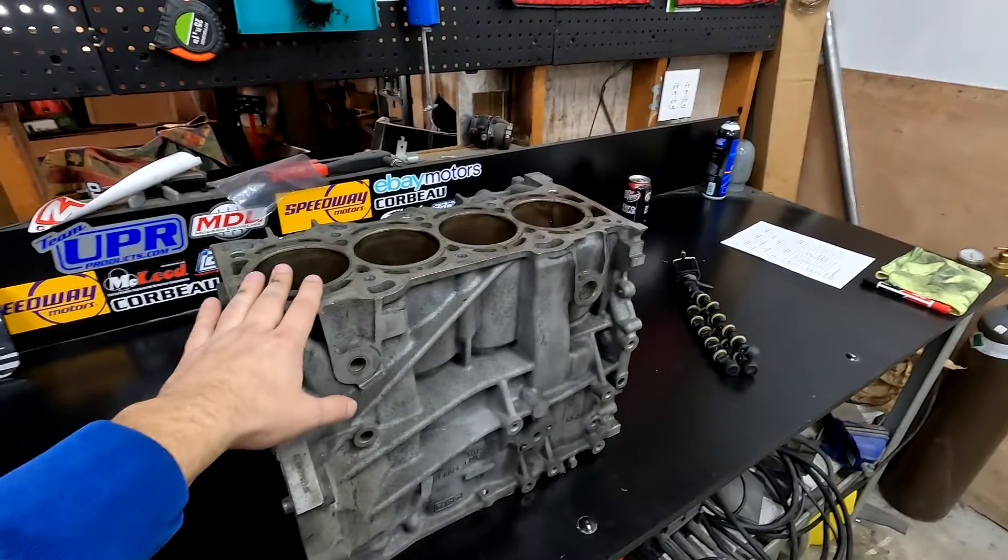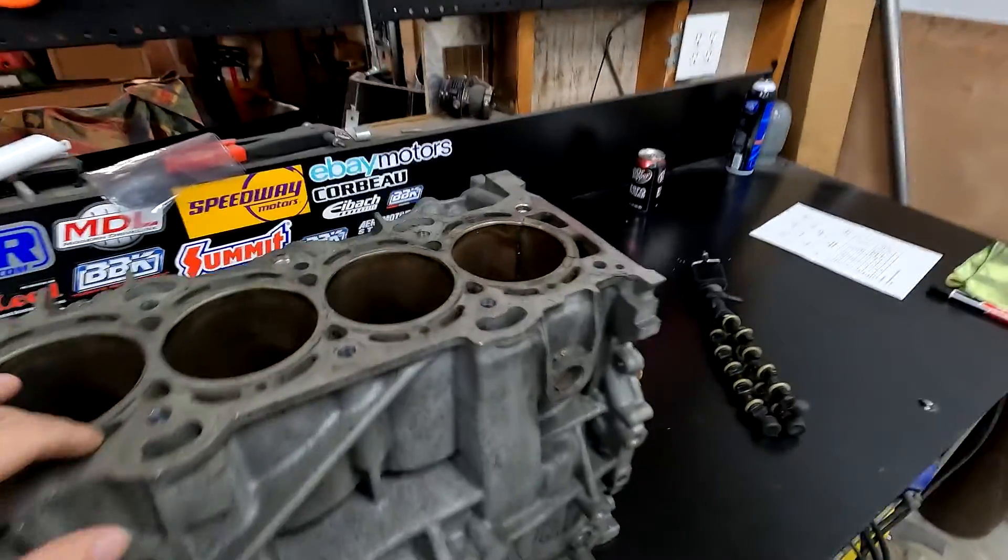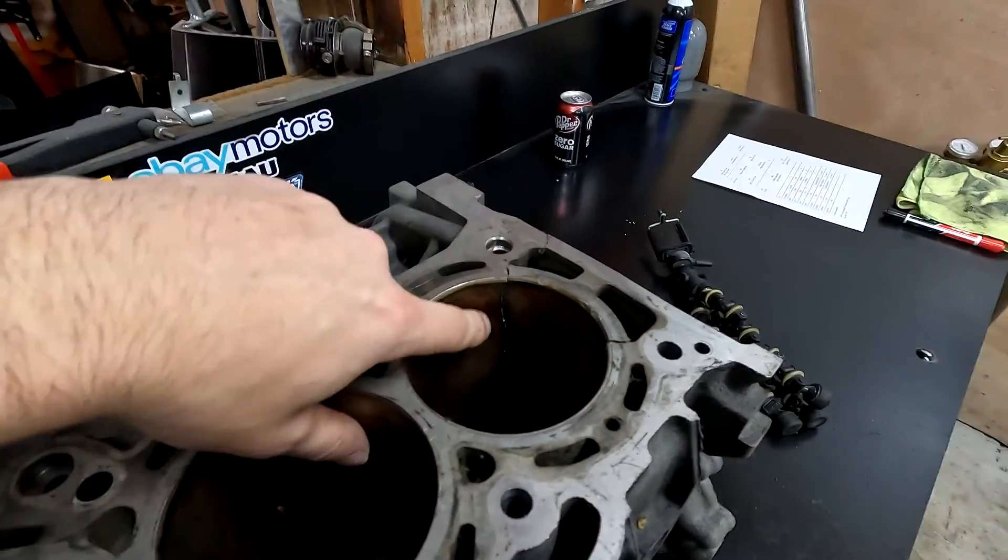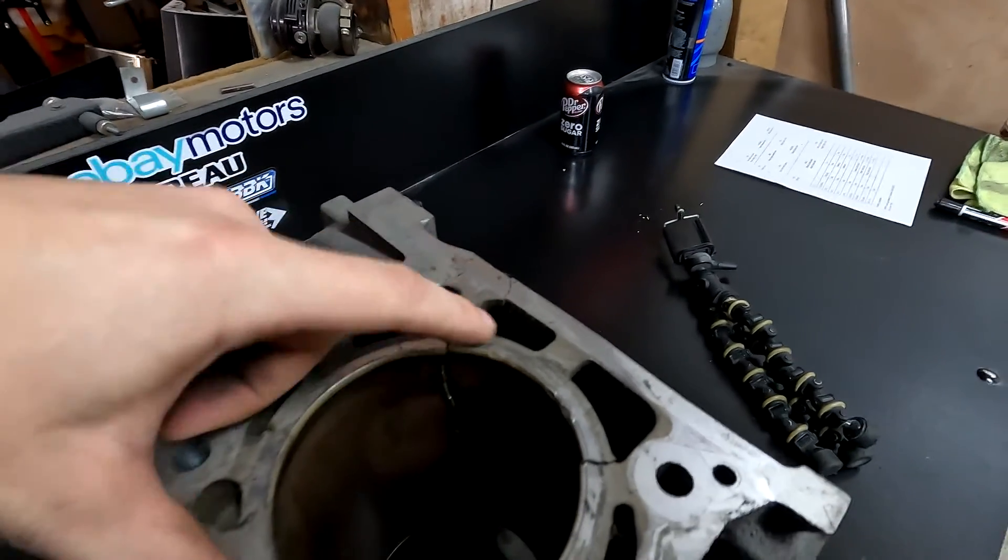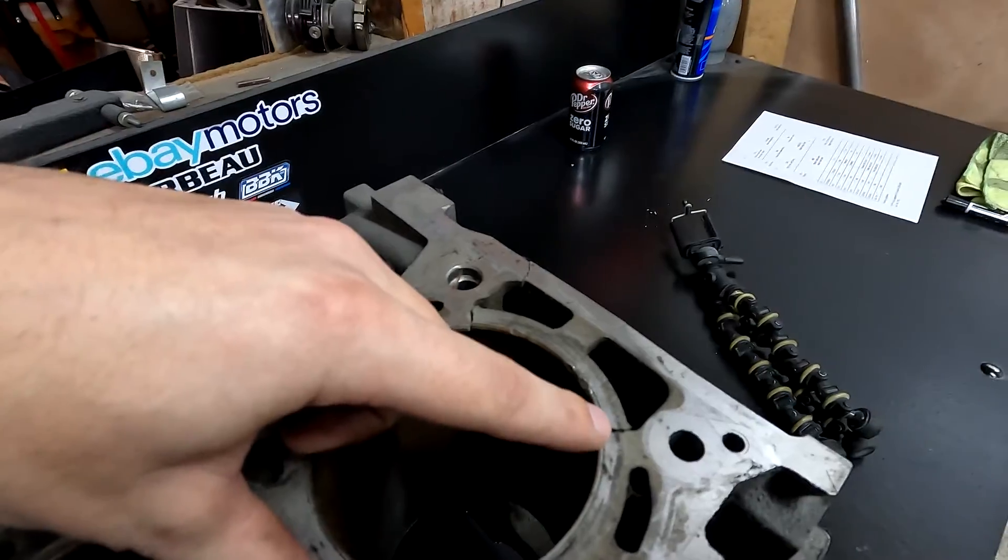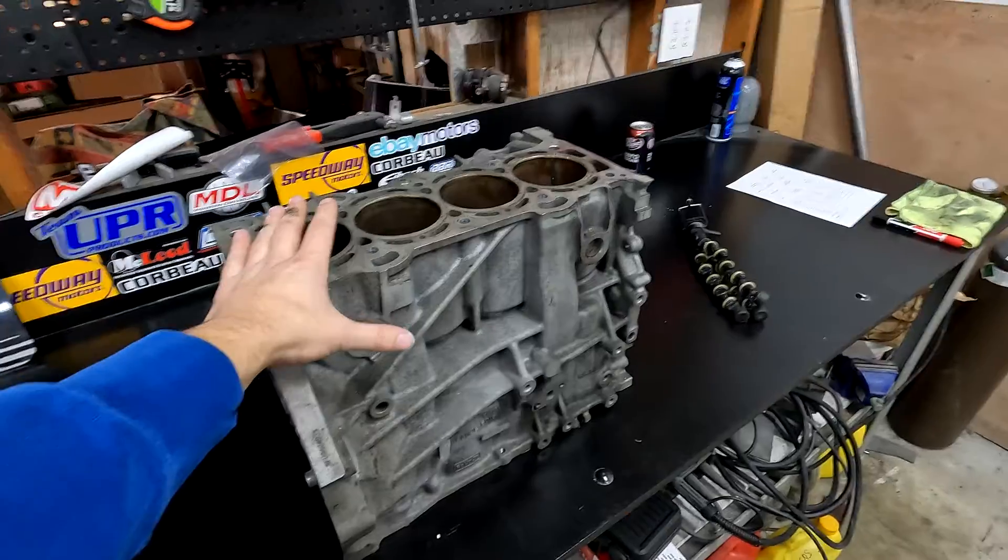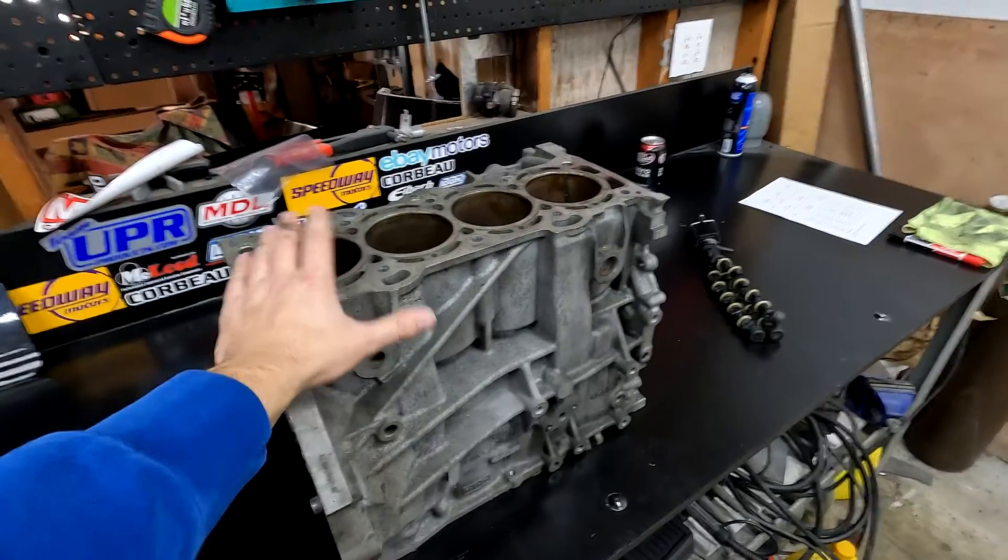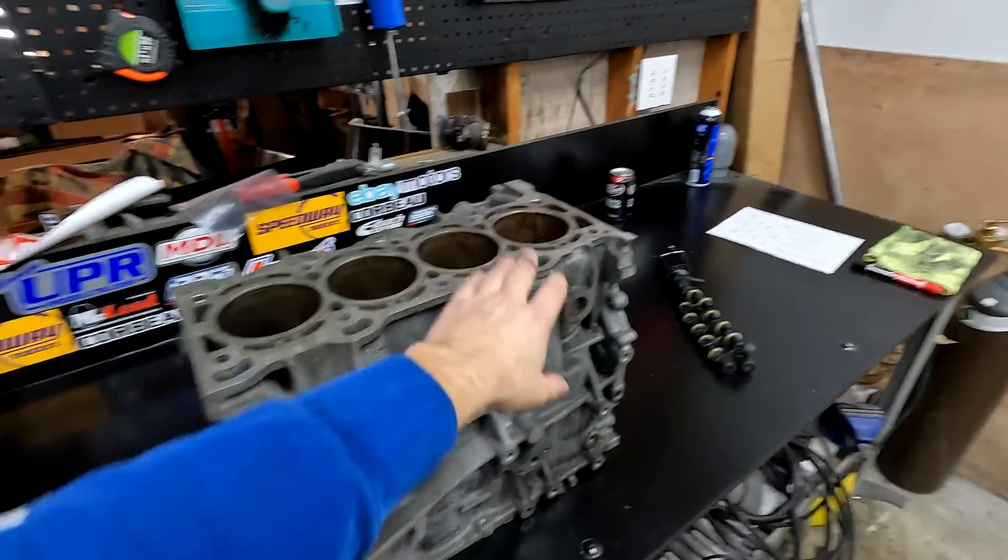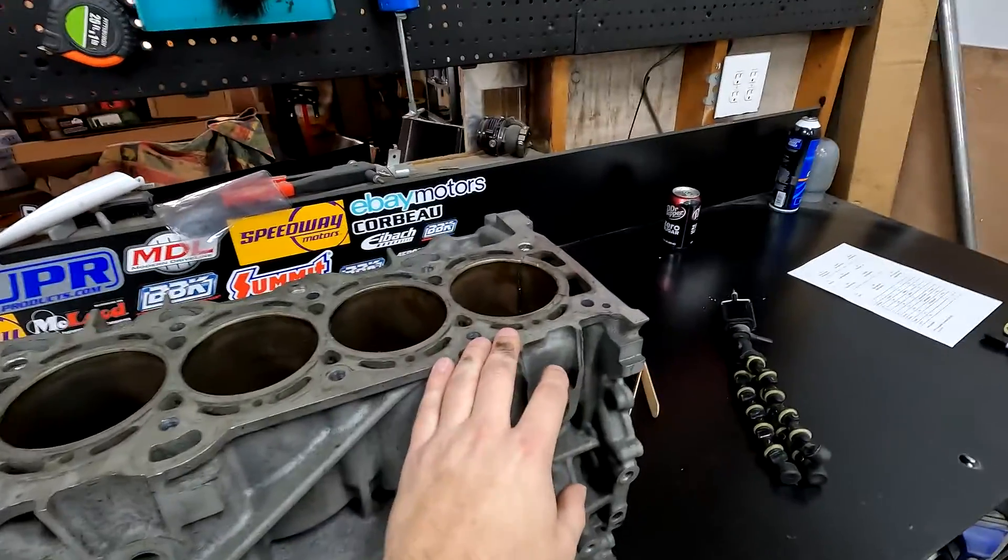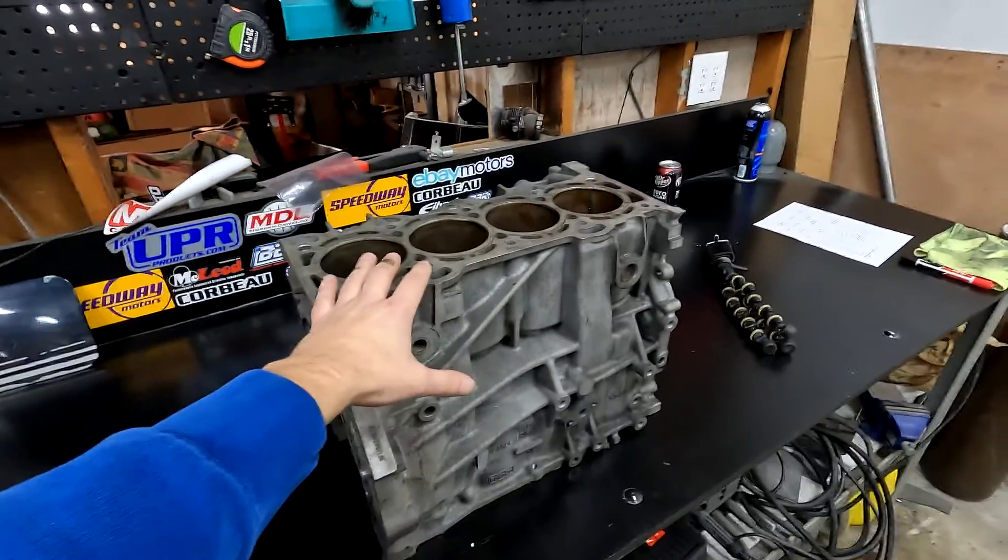This right here is the old 2.0 block from my Focus ST. As you can see, this one has seen some use. We have a crack the whole way down the cylinder liner, up through the water jacket, into the edge of the block. Another one crack on this side through to the water jacket. What caused this failure, I'm pretty sure, was a leaky fuel injector on my aux fuel setup. The injector leaked into this cylinder and caused a hydro lock situation which forced the side of the block out.